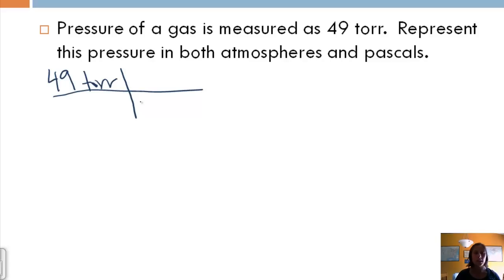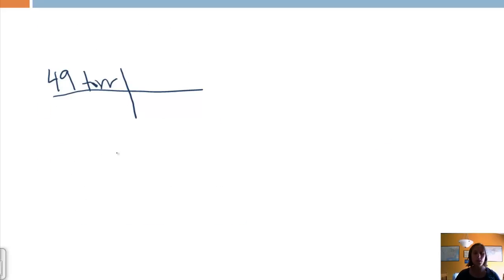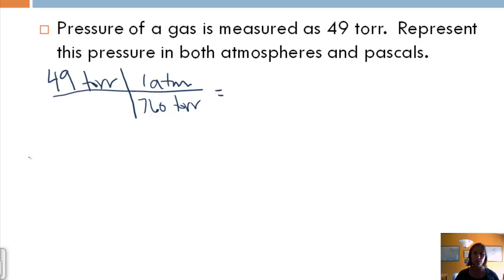I know that 760 torr is one atmosphere. So I know that in 760 torr, that's one atmosphere, and then all I would need to do is divide that to get my answer in atmospheres. So we've got 49 divided by 760, that gives me 0.06447. Looks like I have two significant figures, so 0.064 atmospheres.